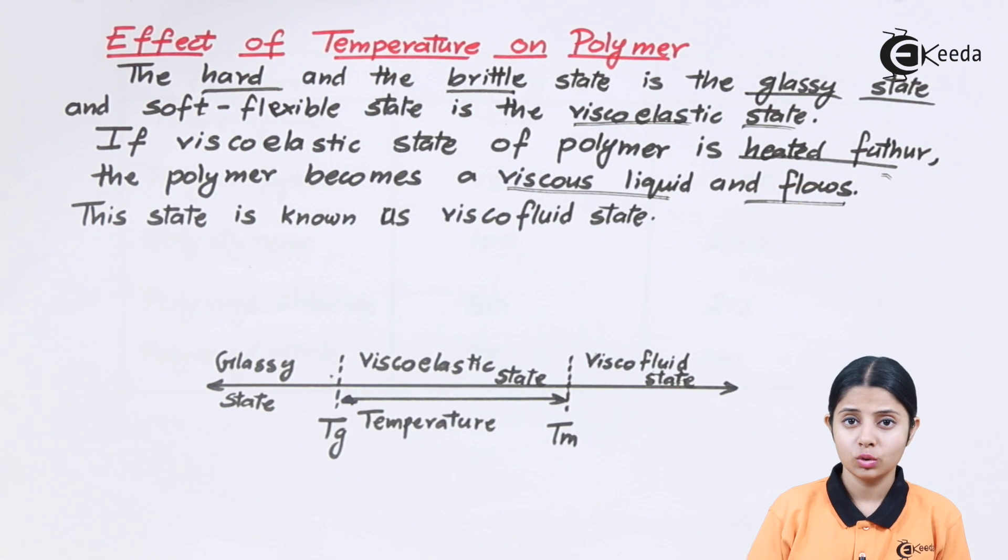It's very important to understand that the third state is the liquid state. For all normal substances, the first state is solid, second is liquid, and third is gaseous. But for polymers, the first state is glassy.